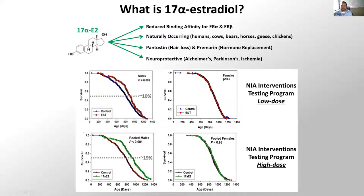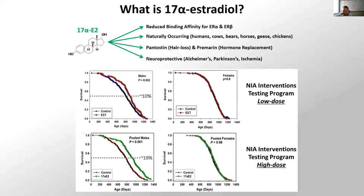17-alpha estradiol is a naturally occurring enantiomer of beta-estradiol. It has minimal binding affinity for ER-alpha and ER-beta, which led many to believe it has its own novel receptor, although through this publication we believe it acts through ER-alpha. It is currently prescribed as a hair loss therapy in Europe and South America under the name Pantostin, and accounts for about 10 percent of Premarin. It came to be known in the aging field due to its neuroprotective effects related to models of Alzheimer's and Parkinson's.